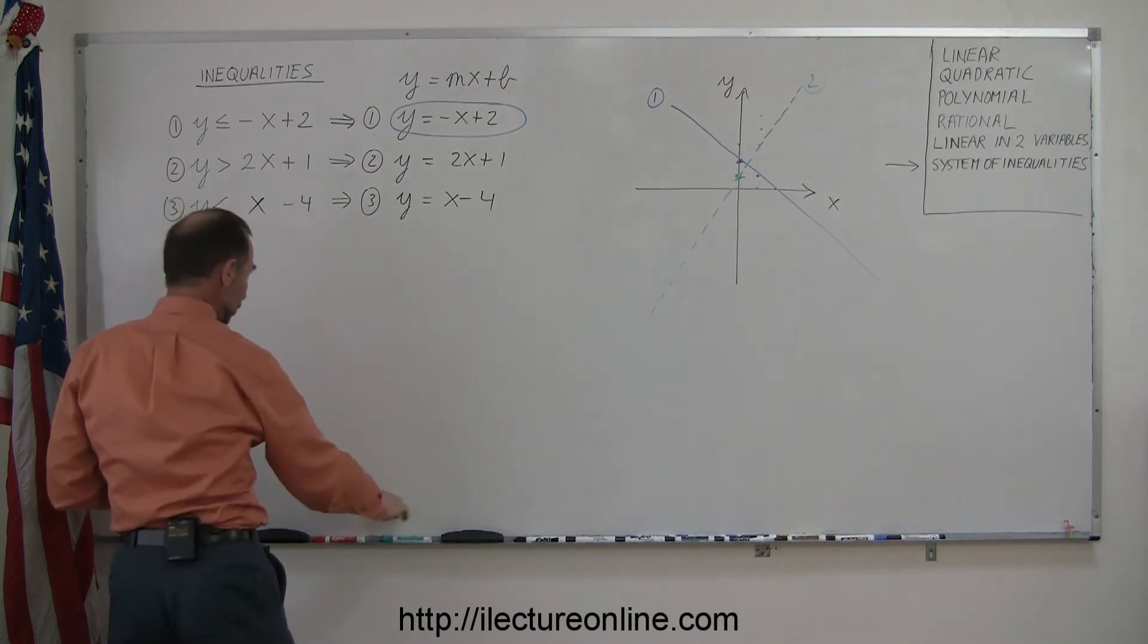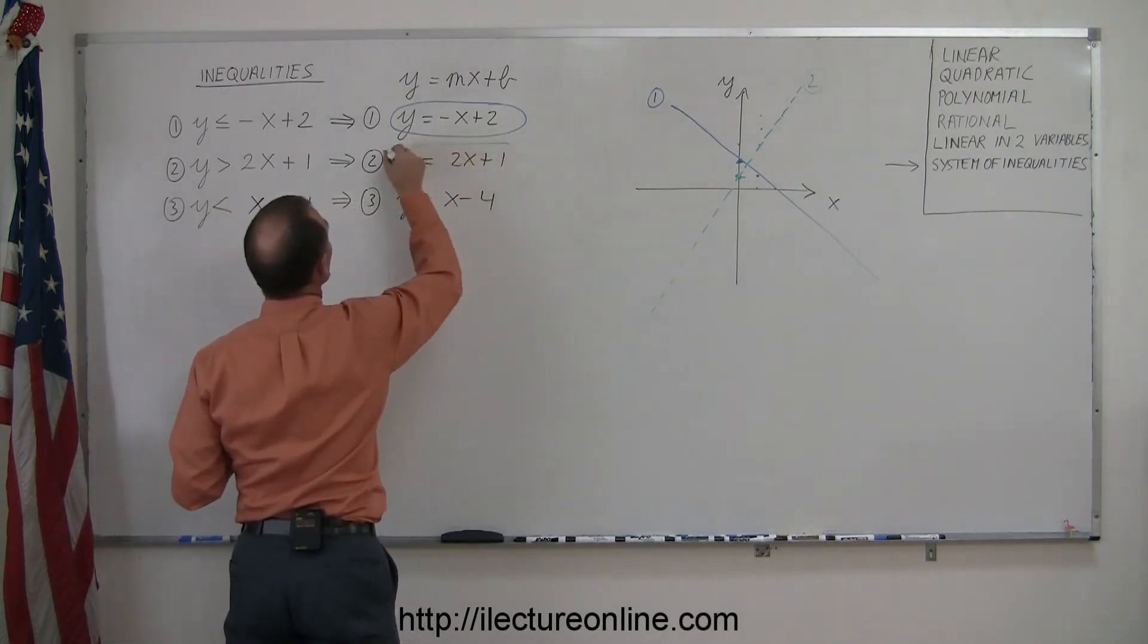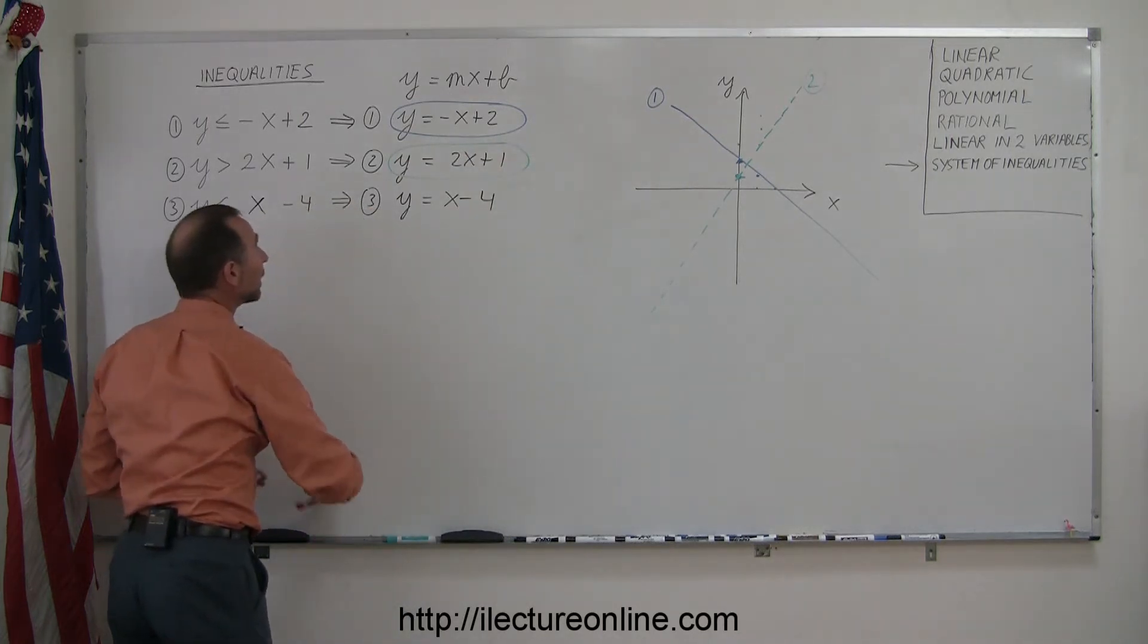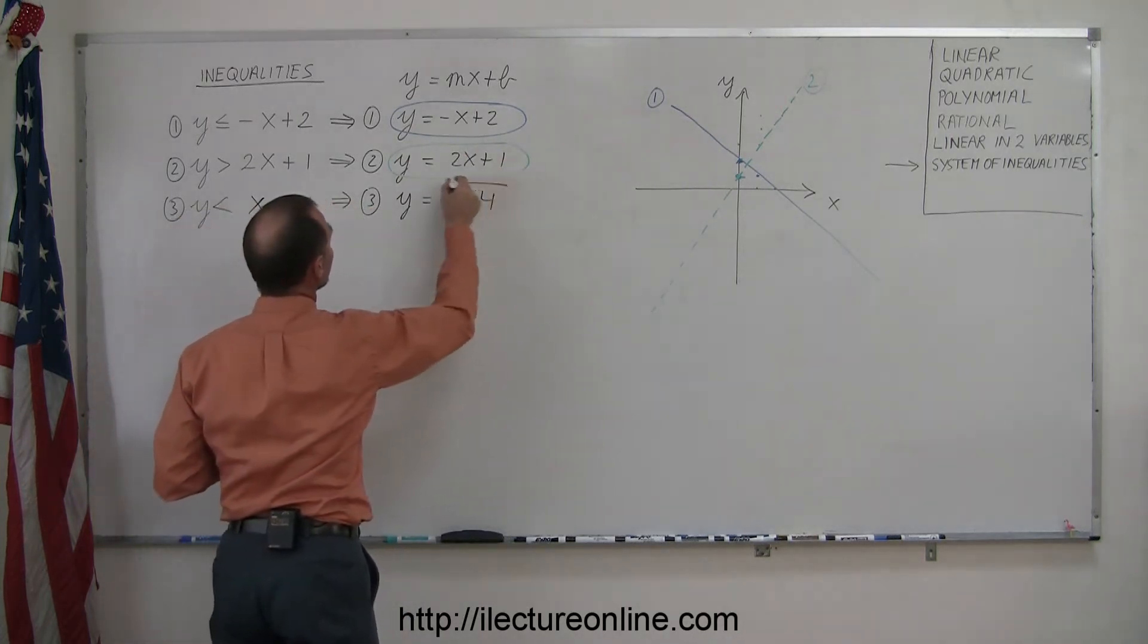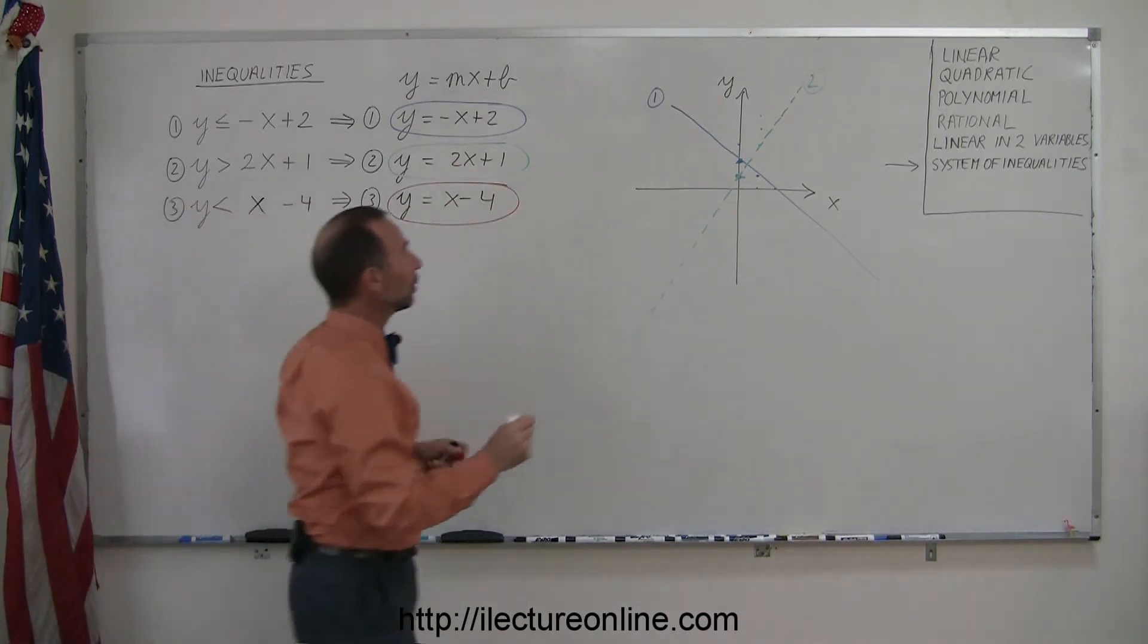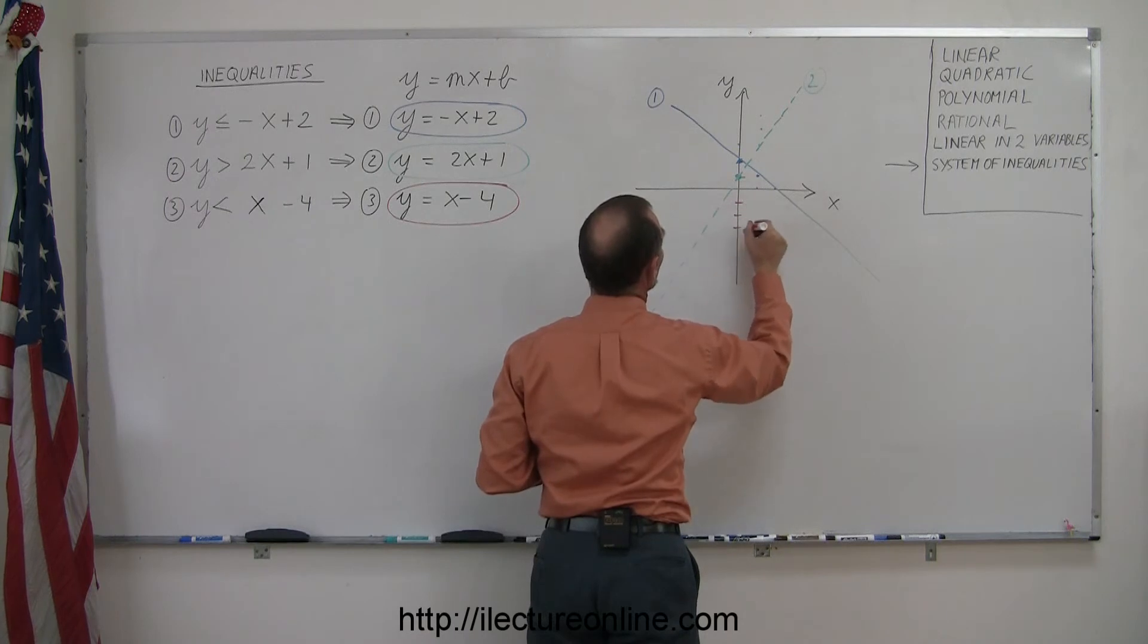And now, let me go ahead and color. There we go. Now, for line number 3, we'll use red. The intercept is minus 4. 1, 2, 3, 4, minus 4, right there.